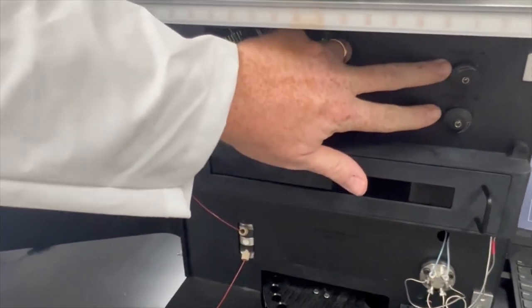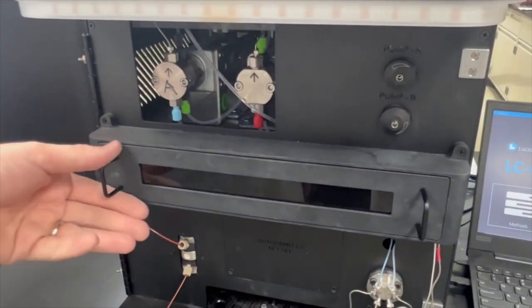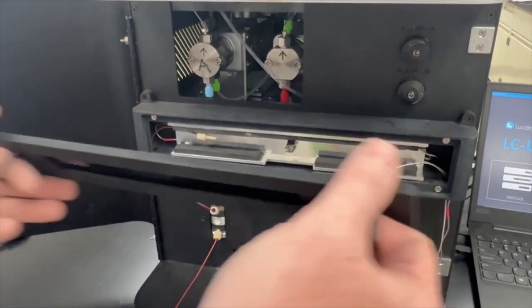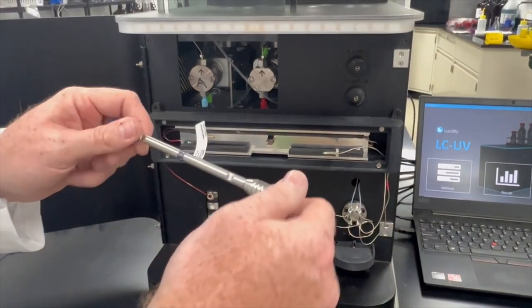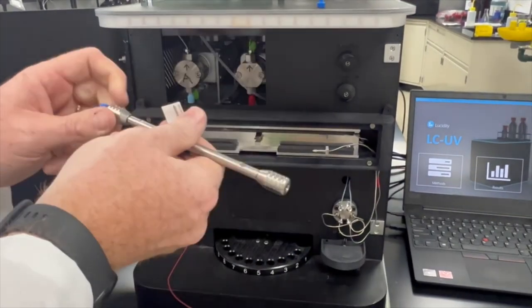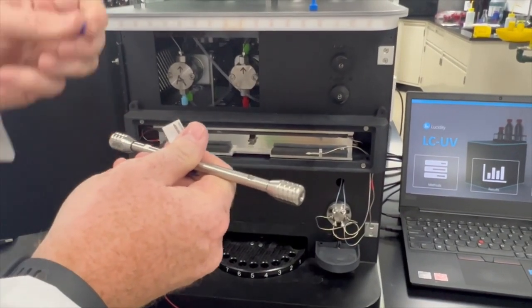We have our pumps, purge valves, and column oven. We're going to connect our column, so we'll remove our blank nuts here and save those for later.